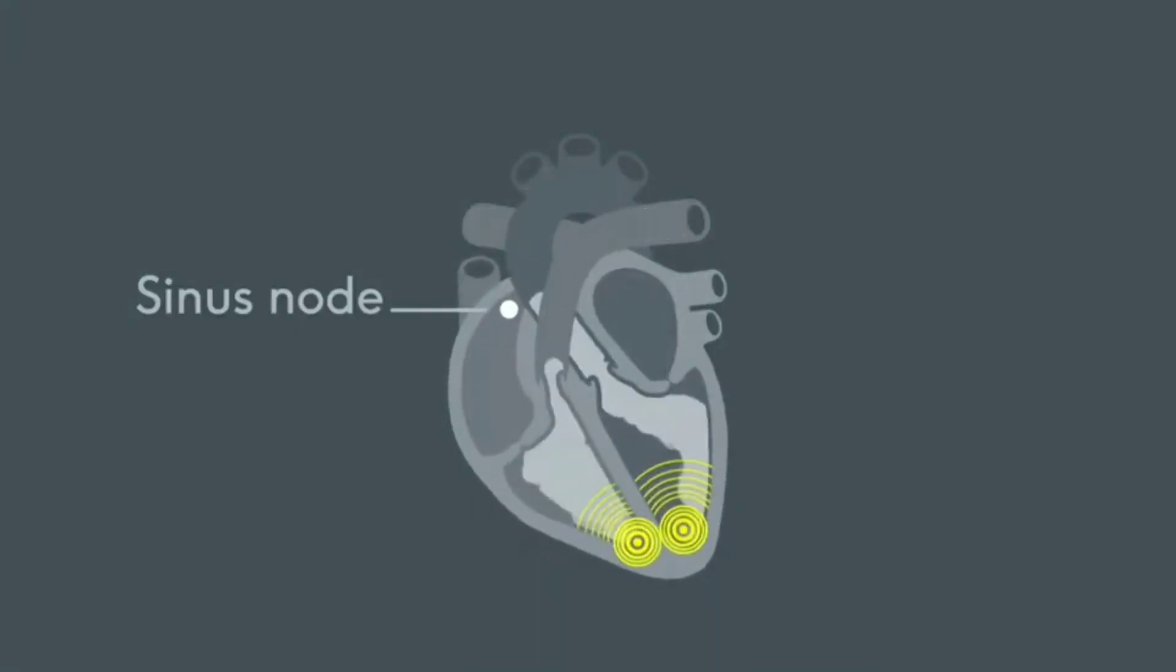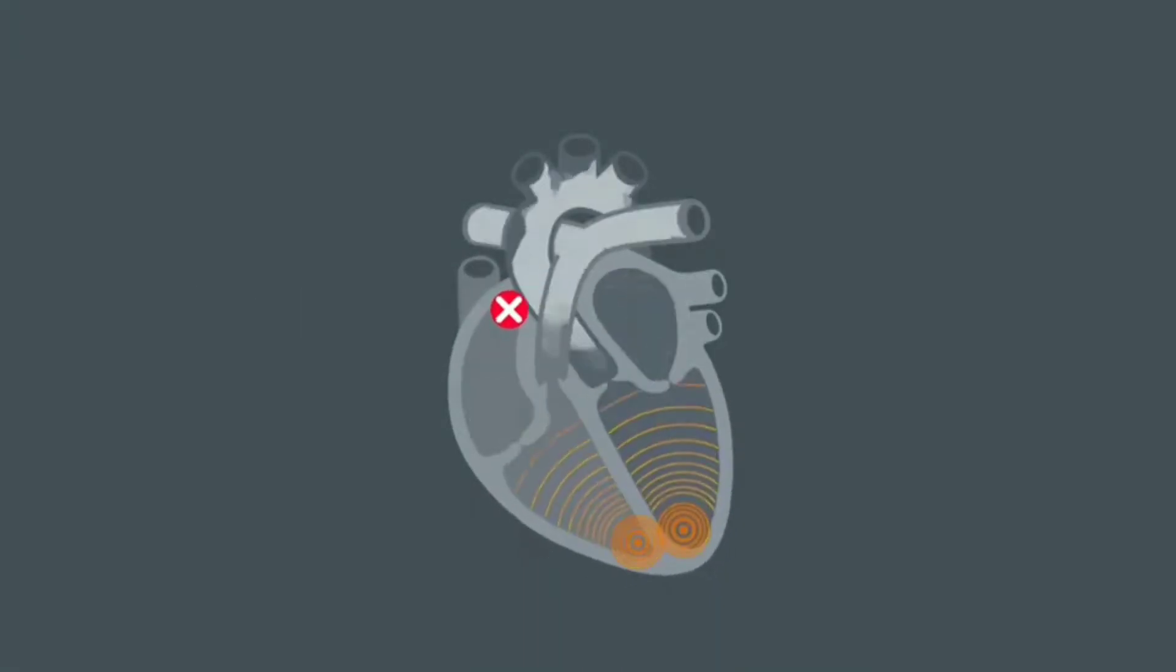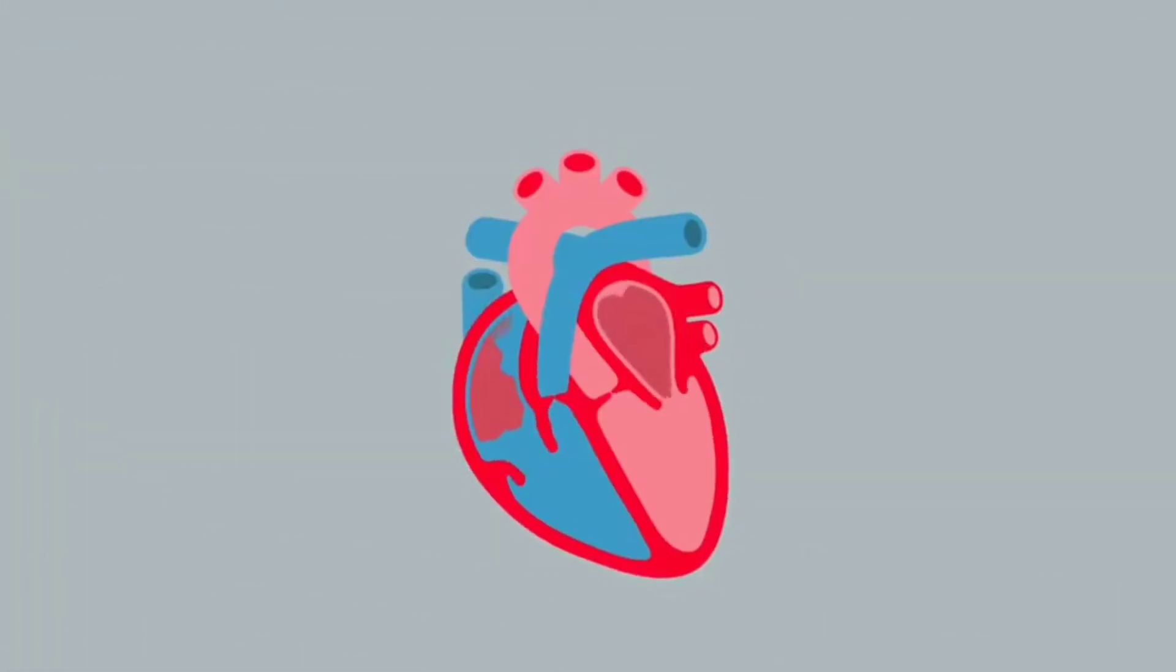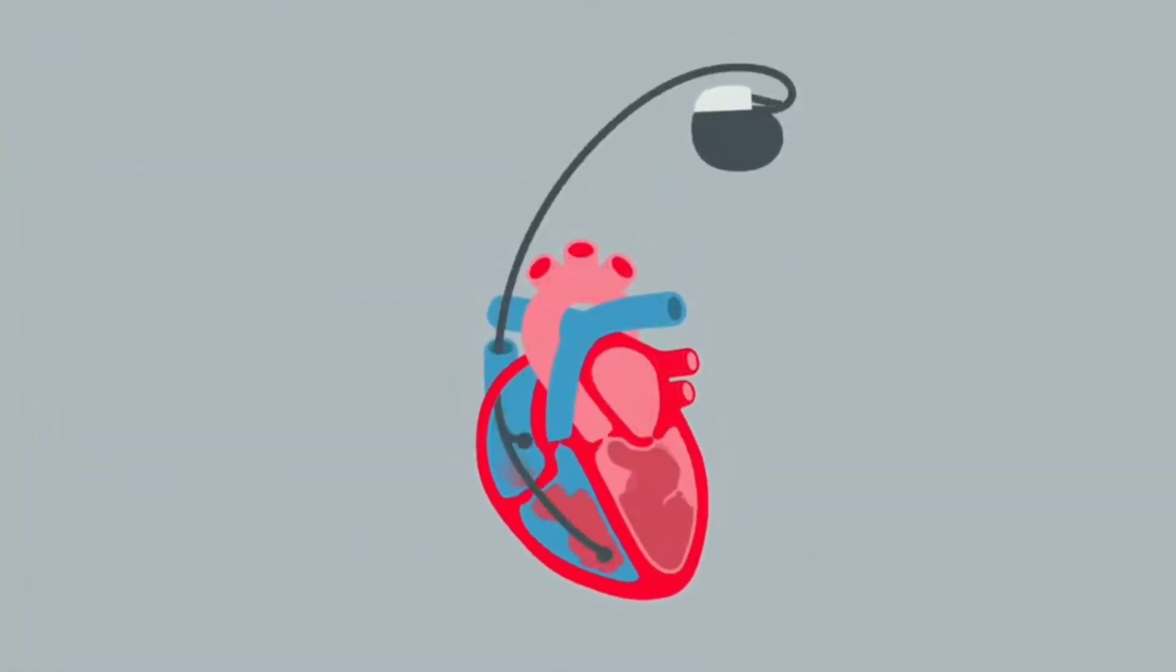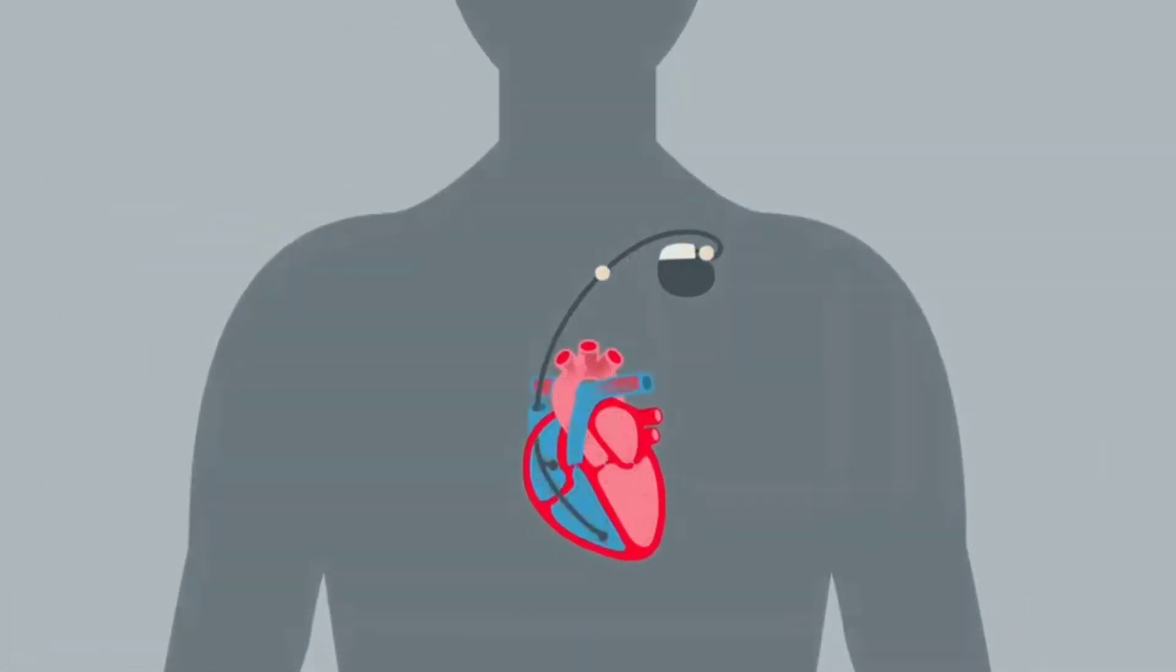and produce a heartbeat. If your sinus node doesn't work properly because of a heart condition, your doctor might recommend a pacemaker, a small implanted device that sends electrical impulses to keep your heartbeat regular. These impulses do not shock the heart, they simply do the job of the sinus node.